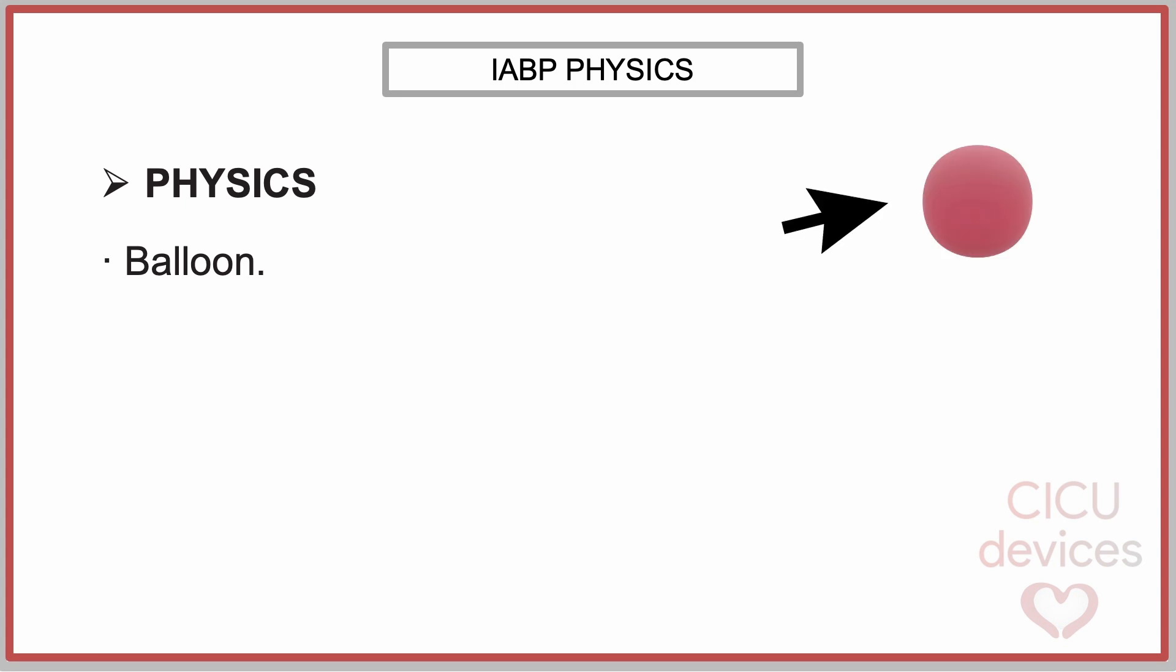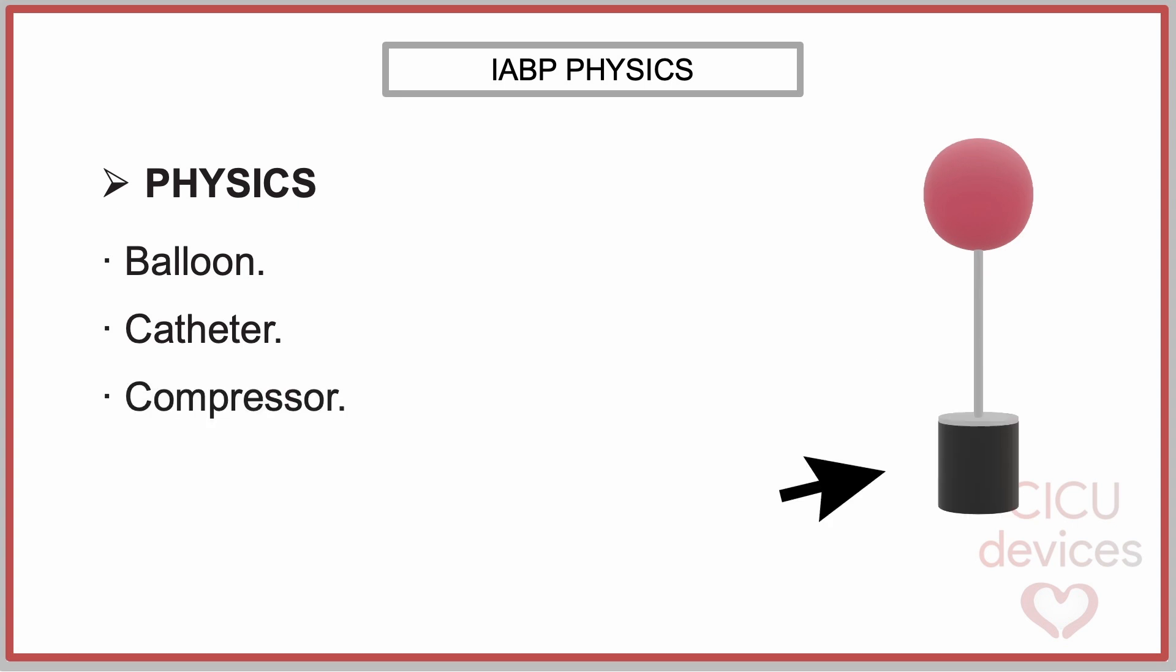In a very schematic way, we can say that an intra-aortic counterpulsation balloon is, as its name suggests, a balloon that inflates and deflates. The balloon is connected to a catheter, which in turn is linked to a compressor that generates positive pressure and vacuum.